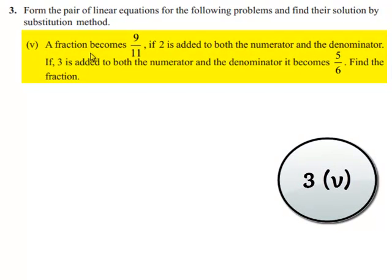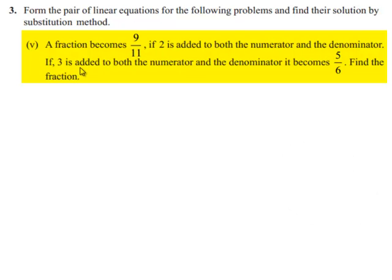Coming to the fifth bit: a fraction becomes 9 by 11 if 2 is added to both the numerator and the denominator. If 3 is added to both the numerator and the denominator, it becomes 5 by 6. Find the fraction.